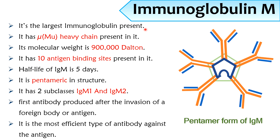Immunoglobulin M: IgM is the largest immunoglobulin present in the human body. It has mu type heavy chains. The molecular weight of IgM is 900 kilodaltons. IgM has 10 antigen binding sites and a half-life of five days. IgM has a pentameric structure and is divided into two subclasses: IgM1 and IgM2. It is the first antibody produced after the invasion of a foreign body or antigen, and IgM is the most efficient type of antibody against antigens.